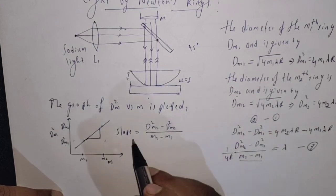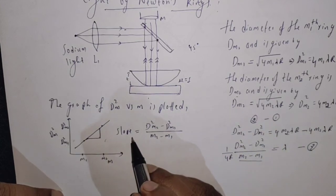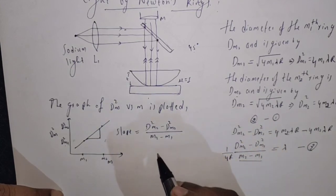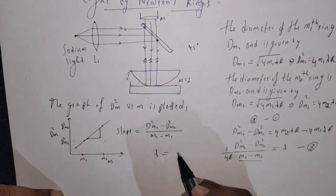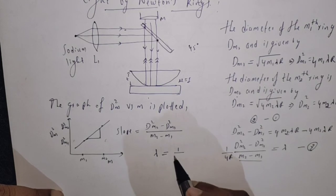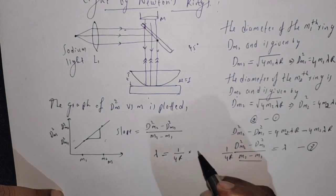In equation 3, we can replace this ratio by the slope. Then we get: lambda equals slope divided by 4R. This is the wavelength of the monochromatic source.